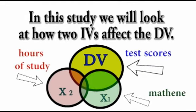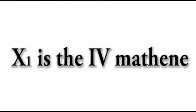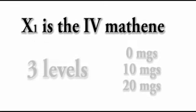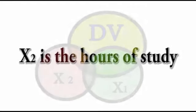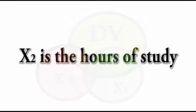In this example, both the IVs, the mathene and hours of study, are predicting how much variance in the DV or test scores we're looking for. In case you forgot, mathene is a fake drug that we came up with that's supposed to increase your ability to do math. In this case there are three levels, each student getting either 0, 10, or 20 milligrams of mathene. And the second independent variable is however many number of hours each student studied towards the test.